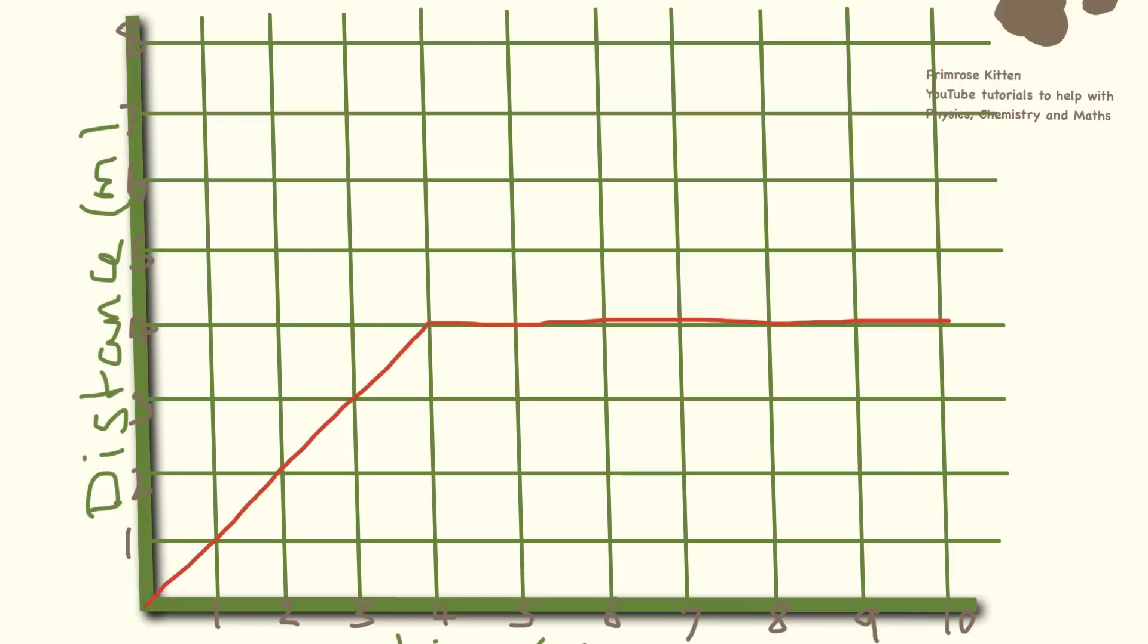In this graph here, something slightly different is happening. We are going up and then we are going across. So the going up bit is a steady speed. And then the going across bit, if we notice, time is going on, but distance is always 4. So on a distance-time graph, when it is going across, it is stationary.